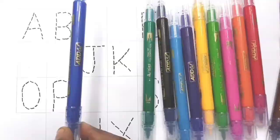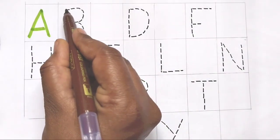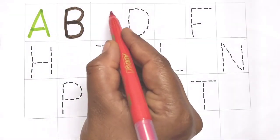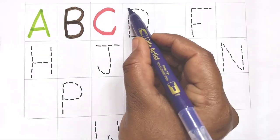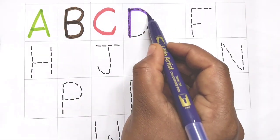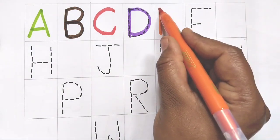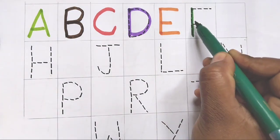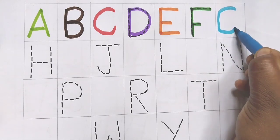A. A for apple. B. B for banana. C. C for cat. D. D for duck. E. E for elephant. F. F for fish. G. G for giraffe.